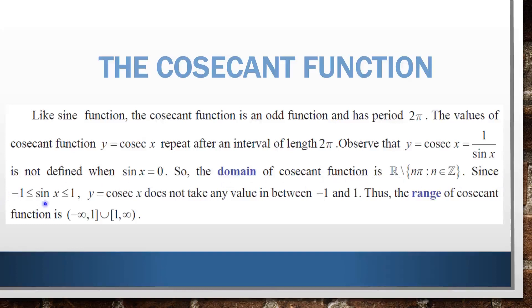Since the value of sin x lies between −1 and 1, that is −1 ≤ sin x ≤ 1, y = cosecant x does not take any value in between −1 and 1. Thus the range of the cosecant function is (−∞, −1] ∪ [1, +∞).